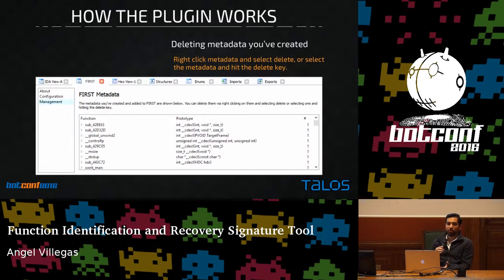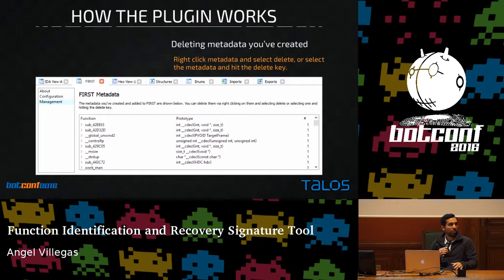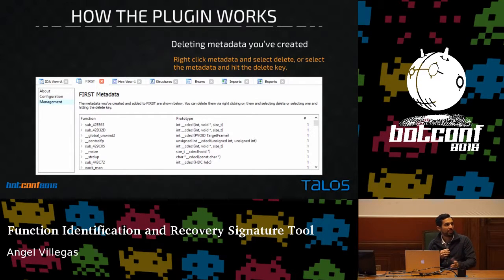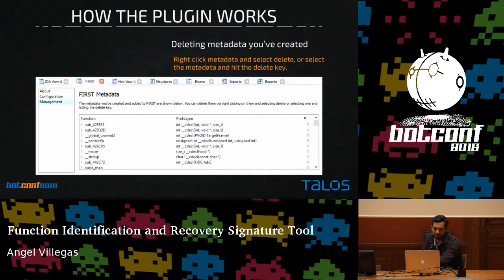Creating annotations is really helpful. In our testing, I opened a sample of Zeus, prefaced all function names with 'Zeus underscore' and the hash, uploaded them to FIRST, then opened another Zeus sample, checked all functions against FIRST, and got tons of hits. The names I provided weren't very insightful — 'Zeus underscore hash underscore sub underscore address' isn't helpful — so we also allow people to manage the annotations they add to FIRST.